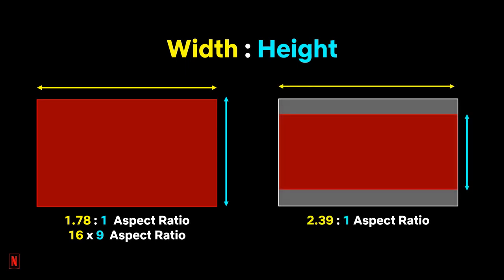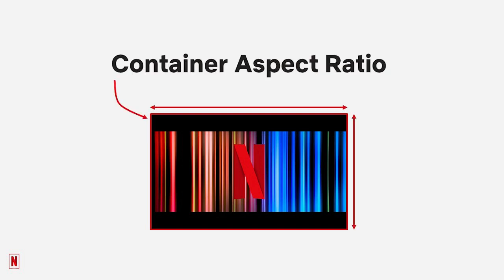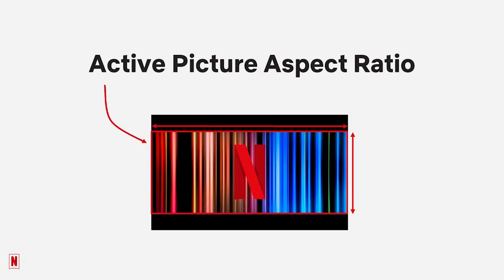On a production, there are two different types of aspect ratios to consider. The container aspect ratio is the width and height of the file's container, including the mats, as seen here with the red box. When referring to original camera files, this is the full image area that the sensor is recording. A great example of container aspect ratio would be the final delivery to Netflix — this file's container is always in the form of UHD or HD, which has a container aspect ratio of 1.78 to 1. When the term active picture aspect ratio is used, we're referring to the image area within the container that's being framed on set and ultimately delivered to viewers at home — this is where the action happens.